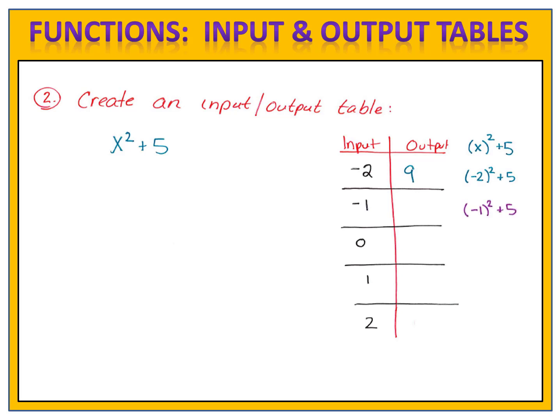Let's see how you did. When we input a negative 1, we get an output of 6. When we input a 0, we get an output of 5. When we input a 1, we get an output of 6. And when we input a 2, we get an output of 9.